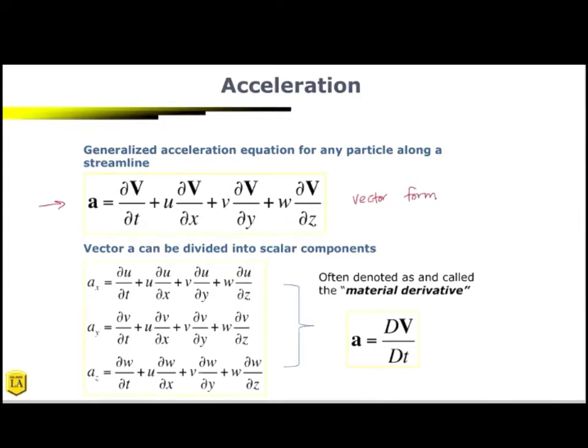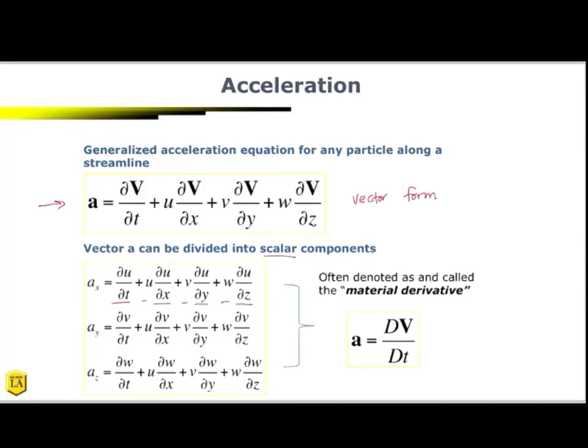Now, in order for that vector form to be divided into scalar components, we can actually rewrite it this way, where ax is equal to du/dt plus u du/dx plus v du/dy plus w du/dz. So I want you to notice something. I want you to pay careful attention to the numerator in our ax equation. In the numerator of our ax equation, each have a du. So you're taking a partial differential of u with respect to first time, then X, and then Y, and then Z.